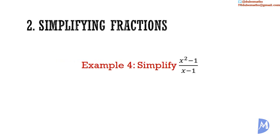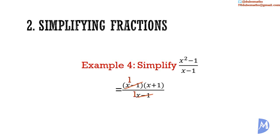Example 4. Simplify: x squared minus 1 over x minus 1. We have to recognize that x squared minus 1 is the difference of squares. Thus, it is equal to (x minus 1) multiplied by (x plus 1). The (x minus 1)s cancel out to remain with x plus 1.